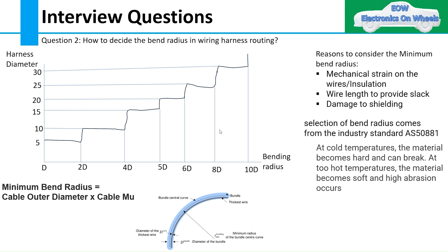First, let's understand what bend radius is. In this corner you can see, if this is your bundle for a wiring harness, then this is the diameter of that bundle D, and this is the radius taken from the center. We call it the minimum radius of the bundle center curve. This is the definition of minimum bend radius.